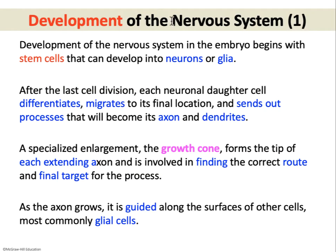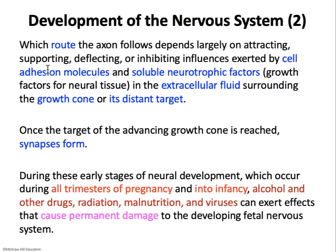The next slides cover development of the nervous system and its potential for healing. In the developing embryo, stem cells give rise to neurons and glia. Once mature neural cells develop, they differentiate, migrate to their destination, and send out cellular processes that become axons and dendrites. A specialized structure called a growth cone forms at the tip of the axon, extending to its target guided by glial cells and by neurotropic growth factors released by the destination itself, forming a gradient that the growth cone follows.